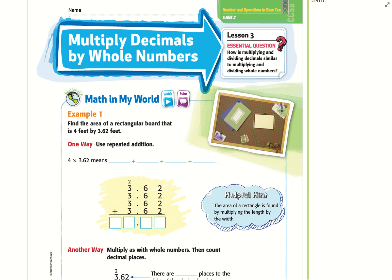Hello and welcome to chapter 6 lesson 3. I'm going to multiply decimals by whole numbers. Example 1: Find the area of a rectangular board that is 4 feet by 3.62 feet.